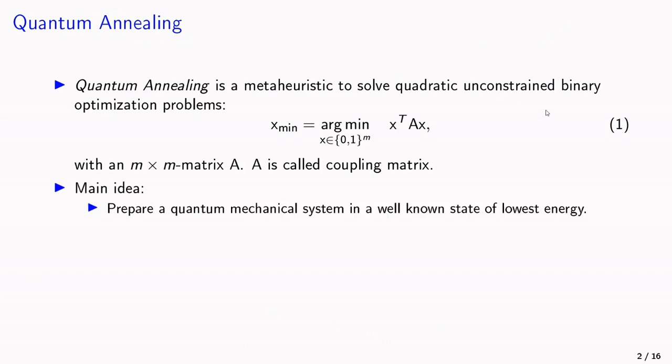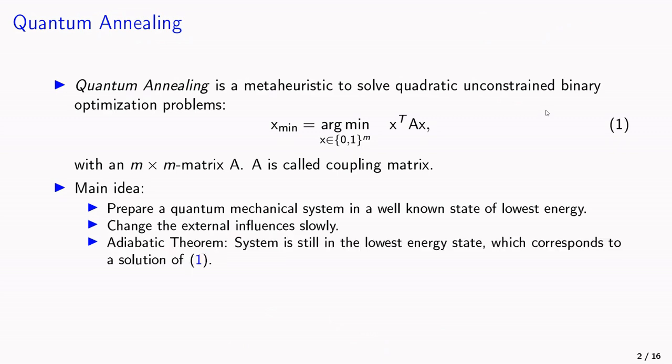So the main idea is that one prepares a quantum mechanical system in a well-known state of lowest energy, and then one slowly changes the external influences. There is the adiabatic theorem that states that at the end the system is still in the lowest energy state, which corresponds to a solution of equation 1.